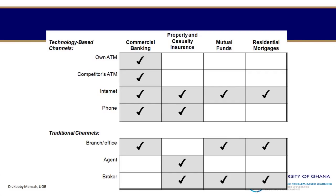Technology-based channels — ATMs, phones, internet, and others — are predominantly technology-based. Traditional means include agents and brokers. Commercial banking has extensively expanded its portfolio of distribution networks and platforms, relying predominantly on technology-based channels lately. We can say that commercial banking has really made a big leap in terms of the uptake and diffusion of technology.